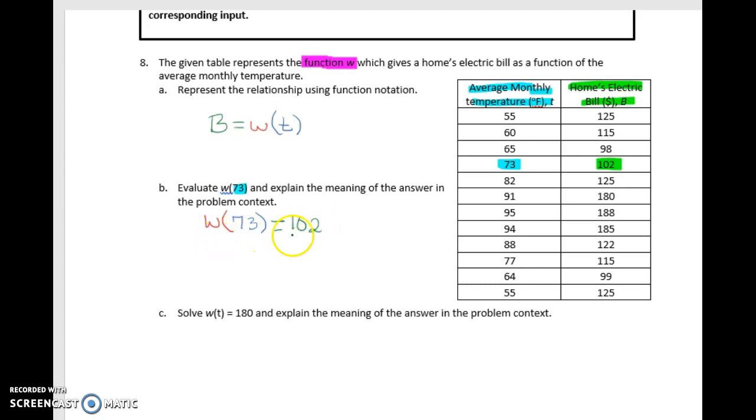I can say W of 73 is equal to 102. If your statement is written in function notation, you do not need to label it. However, if you are not writing in function notation, then we do have to label the 102, and we have to label what it is.